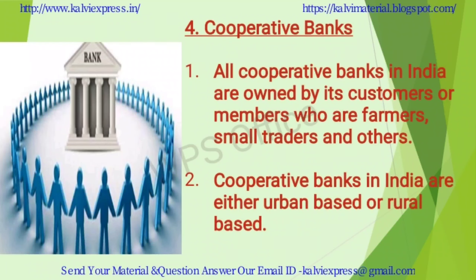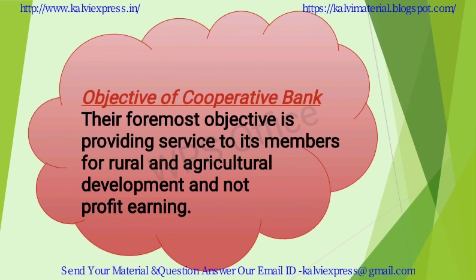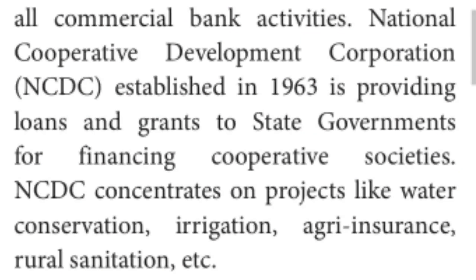In Tamil Nadu, cooperative banks are registered under the Tamil Nadu Cooperative Societies Act of 1983, but their lending comes under the apex control of NABARD. They are controlled by both the RBI and the state government. Their main objective is to provide loans for agricultural development, not to earn profit. They are set up in small towns and villages, and they do not provide as many services as commercial banks, as laws restrict them from doing so.